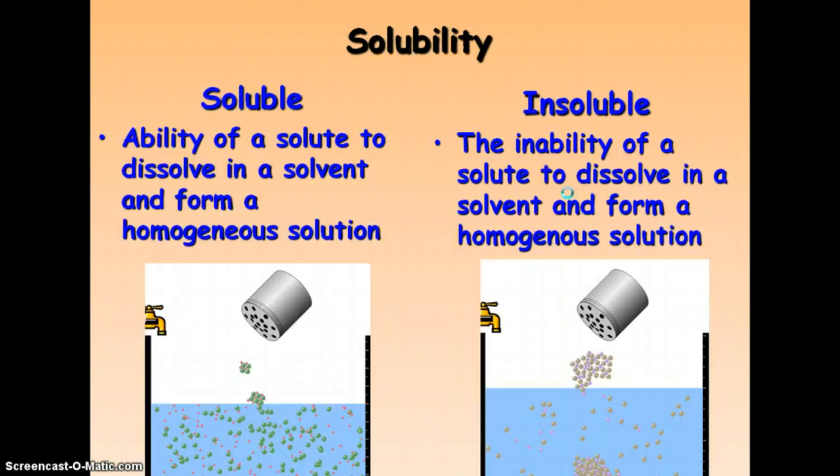Solubility - what is solubility? Well, solubility is going to tell us if something is going to dissolve or not dissolve. Soluble is the ability of a solute to dissolve in a solvent and form a homogeneous solution. And then insoluble is the inability of a solute to dissolve in a solvent and form a homogeneous solution. Here you see everything has dissolved, everything is broken up, all mixed throughout, and then over here you see some are, but then you've got this big clump down here at the bottom that did not dissolve, so it would be insoluble.